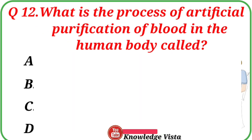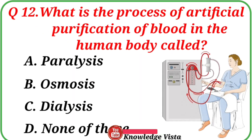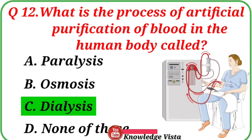Question No. 12: What is the process of artificial purification of blood in the human body called? Your options are: A. Paralysis, B. Osmosis, C. Dialysis, D. None of these. Correct answer is Option C, Dialysis.